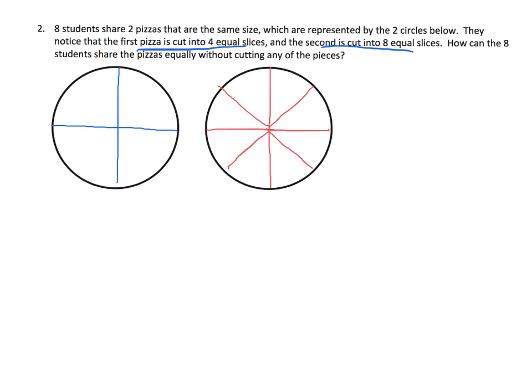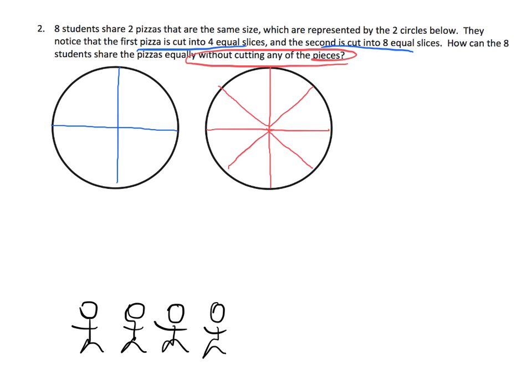How can the eight students share the pizzas equally without cutting any of the pieces? That's going to be the tricky part. So let's draw our eight people: one, two, three, four, five, six, seven, eight. There's our eight kids, and they're supposed to be sharing these pieces equally.